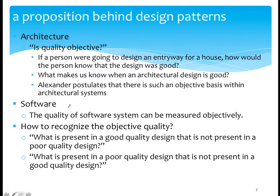In software, the same is true. The quality of a software system — very scientifically or mathematically — we don't have any objective measure for that. But many programmers, the majority, have some consensus on what style or kind of software is good or not. Based on that, we develop design patterns in software. To recognize objective quality, try to answer two questions: what is present in good quality design that is not present in poor quality design, and what is present in poor quality design that is not present in good quality design?